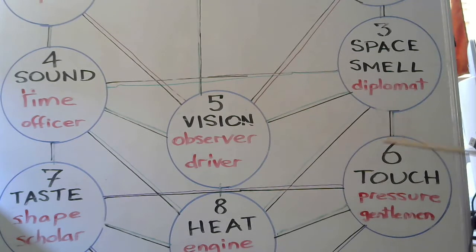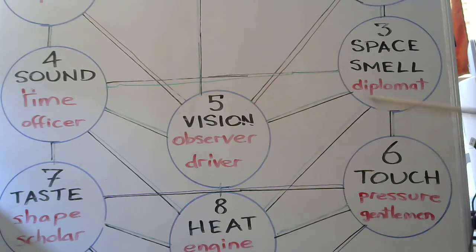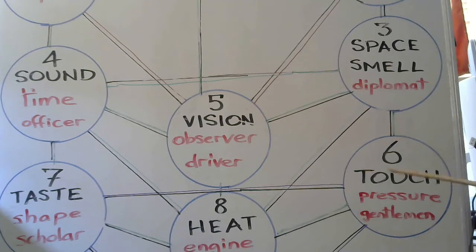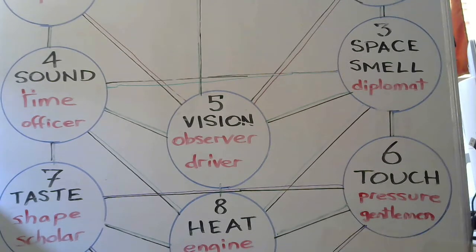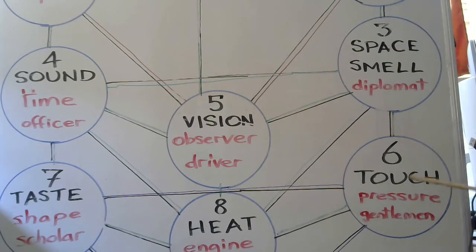45, 46. We come on to the pressure triangle now. The first one is the touch, the gentle touch. 45, 46 is the gentleman - this is also the planning department, taking decisions.